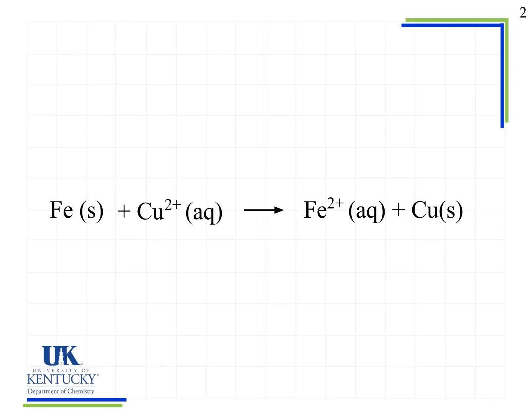The first thing we have to do is assign oxidation numbers according to the rules we've learned. Iron as a free element has an oxidation number of zero. Copper as a monatomic ion has an oxidation number equal to its charge. Same for iron as a monatomic ion — its oxidation number equals its charge. And copper as a free element has an oxidation number of zero. A free element means an atom or element by itself with no charge shown.